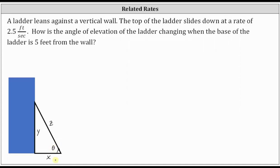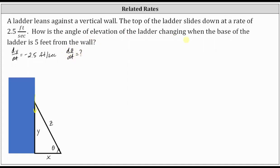Going back to the given information: the top of the ladder slides down at a rate of 2.5 feet per second, so this indicates that dy/dt equals negative 2.5 feet per second. We know it's negative because Y is decreasing by 2.5 feet per second. We're trying to determine the change in the angle of elevation, which is dθ/dt, right when the base of the ladder is five feet from the wall, meaning when X equals five feet.